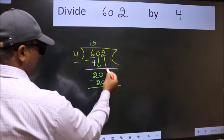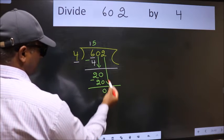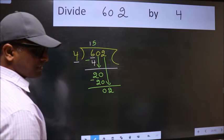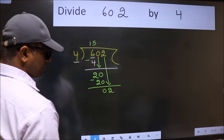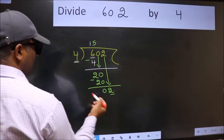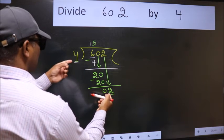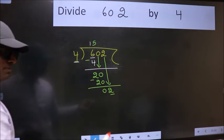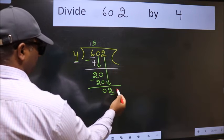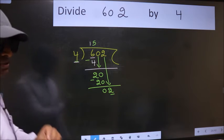After this, bring down the beside number. So 2 down. After this step, the mistake happens and the mistake is this. Here we have 2 and here 4. 2 is smaller than 4. So what many do is they directly put dot, take 0, which is wrong.